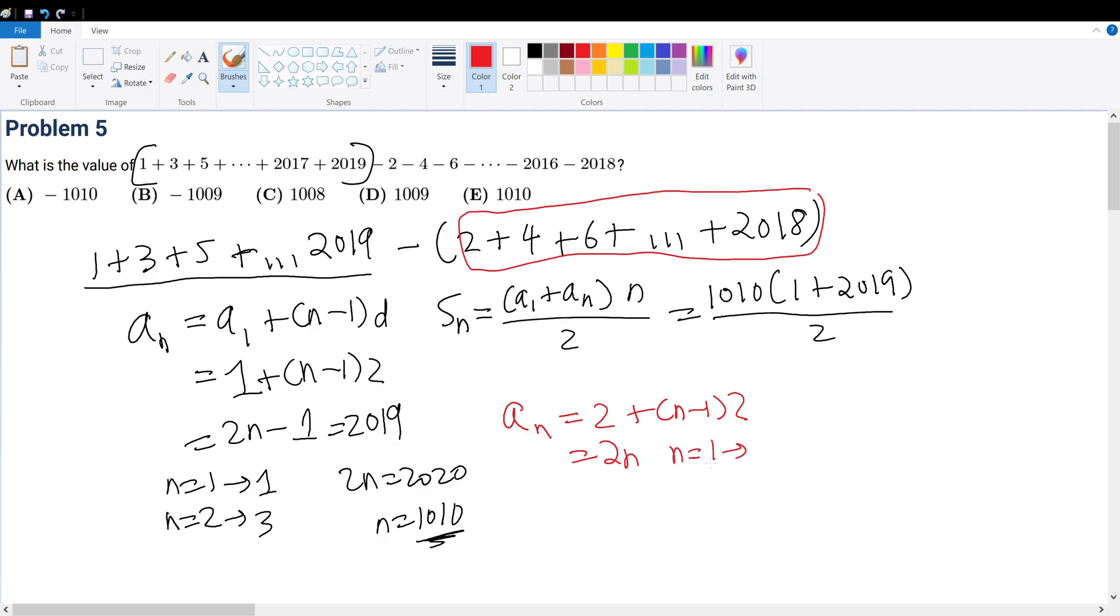Now, 2n must equal 2018, so n must equal 1009. I have 1009 terms, so the summation for the evens will be 2 plus 2018 times 1009 divided by 2.